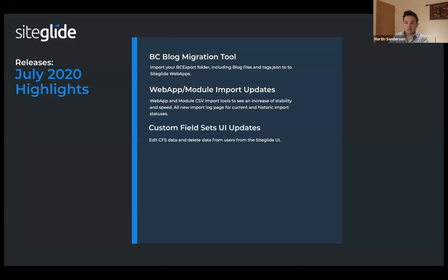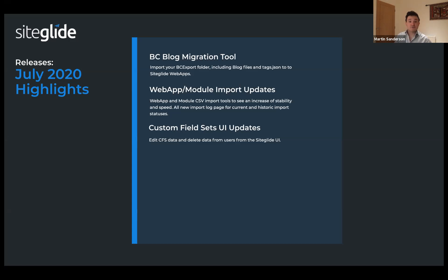We also have a new page for viewing a history of your imports and any error messages or success messages. Next is custom field sets in the UI — rather than needing to use the CLI or CSVs, you can now edit the CFS data straight in the admin, and you can also delete it from users. You can do it straight in there, point and click.